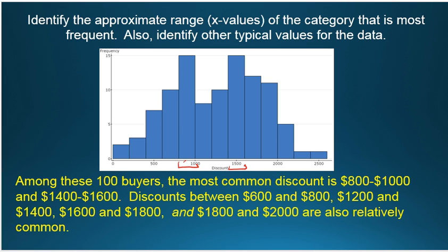But there are other common ones. For example, this from, going from small to large, from 600 to 800 is fairly common. I would say from 1,200 to 1,400 is fairly common. And these latter two are fairly common.